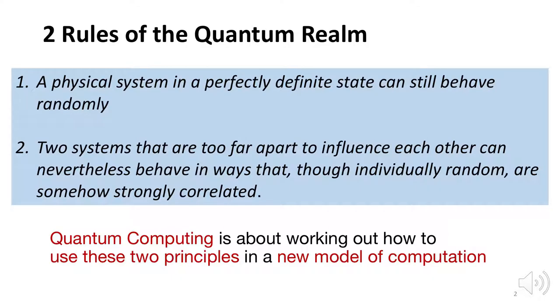Second, perhaps even stranger, two systems that are too far apart to influence each other can nevertheless behave in ways that, though individually random, are somehow strongly correlated. This is due to entanglement — information is spread across the two systems.